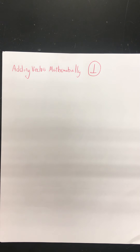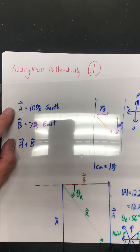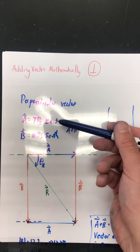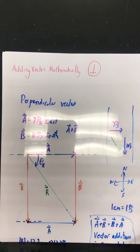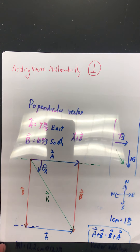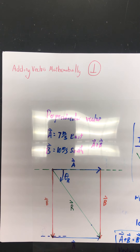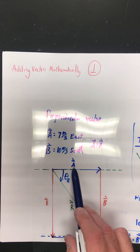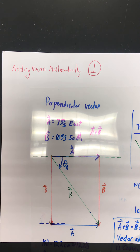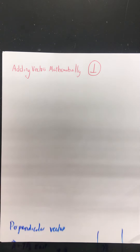We did that problem graphically in class. For cohort A, the problem was 10 meters per second south and 7 meters per second east. For cohort B, I used vector A as the east one and B as the south one. So I'm going to adopt that notation. We'll name the east vector A and the south vector B — same drawing, same resultant, just a slight distinction in notation between the two classes.